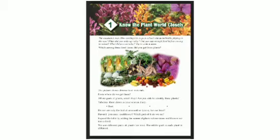Which food items are getting from plants? Under that picture, the caption reads: 'The picture shows diverse food materials that we already know. In this picture we can see different kinds of food materials. From where do we get them? All are parts of plants, aren't they?' So all are the different parts of plants. Are you able to identify these plants? I am showing pictures of the different parts of plants.